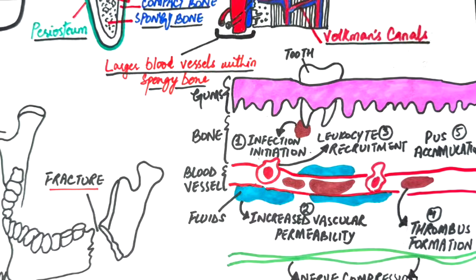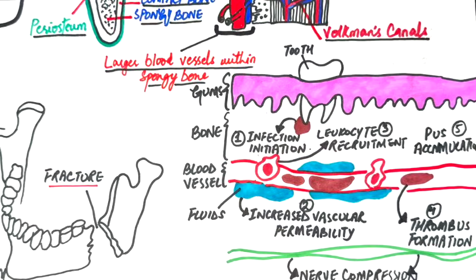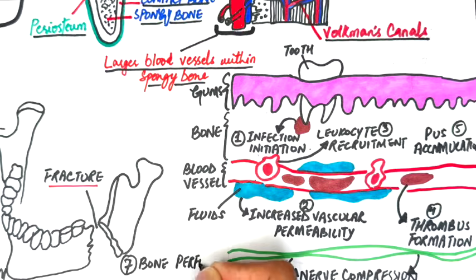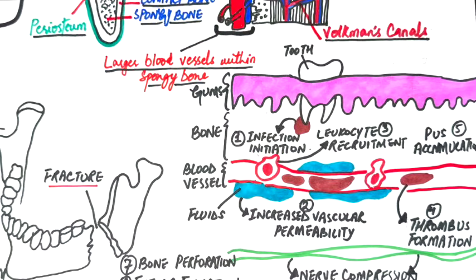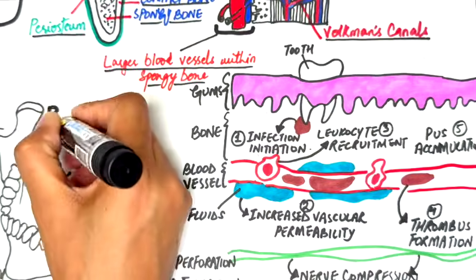As the infection further spreads throughout the bone, it keeps disrupting blood flow and causes widespread bone destruction. In severe cases of osteomyelitis, the infection can cause perforation of the bone with pus accumulating beneath the mucosa. Also, in chronic cases, a fistula may form as pus drains through a channel created by the infection.